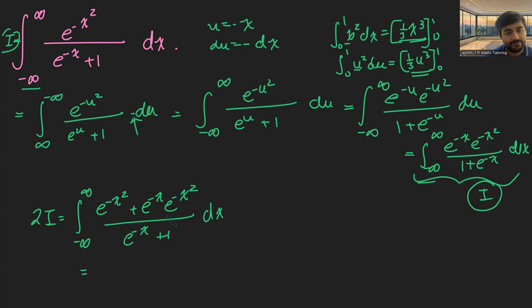And then this, I can factor out e to the minus x on the top. This is going to be equal to the integral from minus infinity to infinity of e to the minus x squared, e to the minus x plus 1 over e to the minus x plus 1. And you can probably see where this is going.